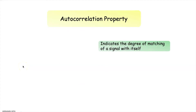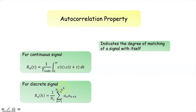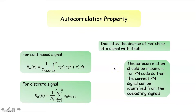Next we have the autocorrelation property. Autocorrelation indicates the degree of matching of a signal with itself. For a continuous signal the autocorrelation can be determined by this expression, where T_code represents the code duration, c(t) is the signal, and tau is the shift or delay of the signal. For a discrete signal the autocorrelation is determined by this expression, where N_c is the code duration, a_n is the nth bit, and k is the shift in bit position.